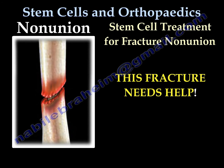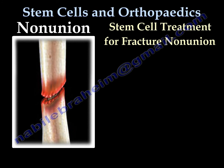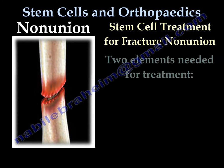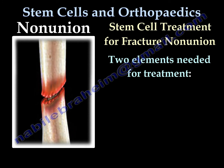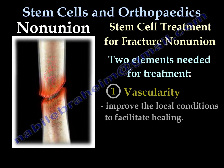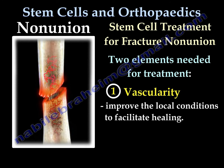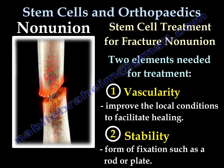This fracture needs help. Two elements are needed for the treatment of a nonunion: vascularity, which means you improve the local condition to facilitate healing, and stability — some sort of rigid fixation, such as a rod or a plate.